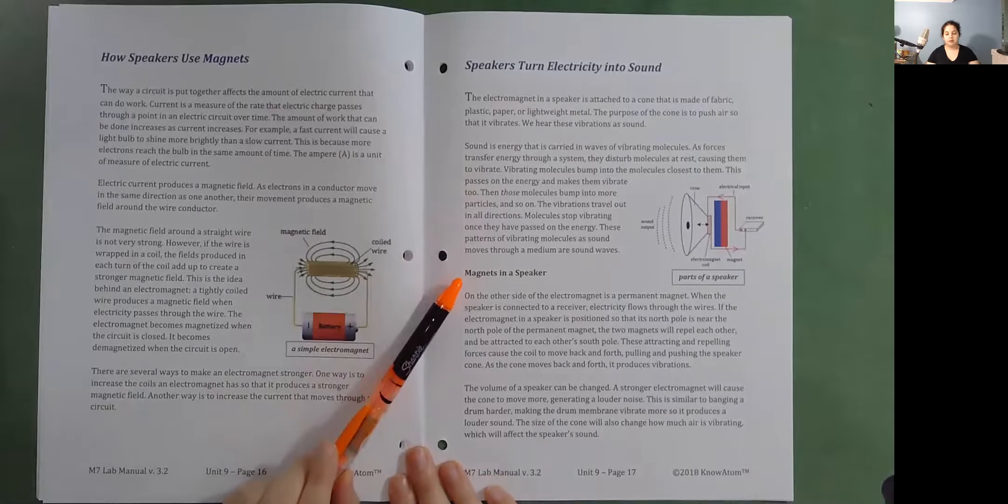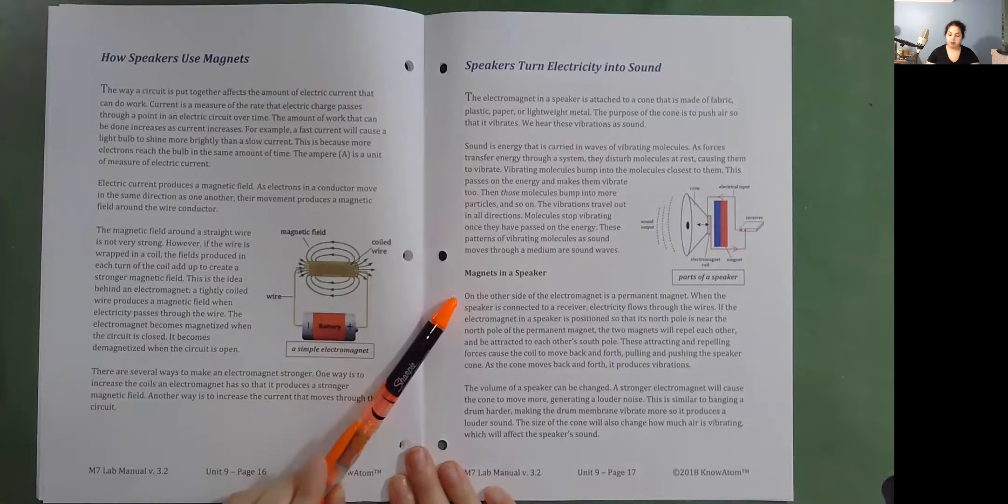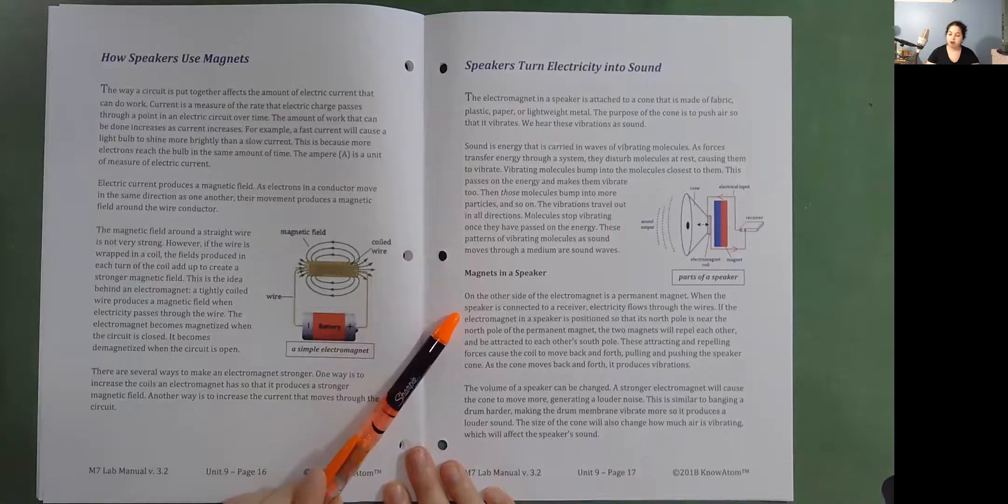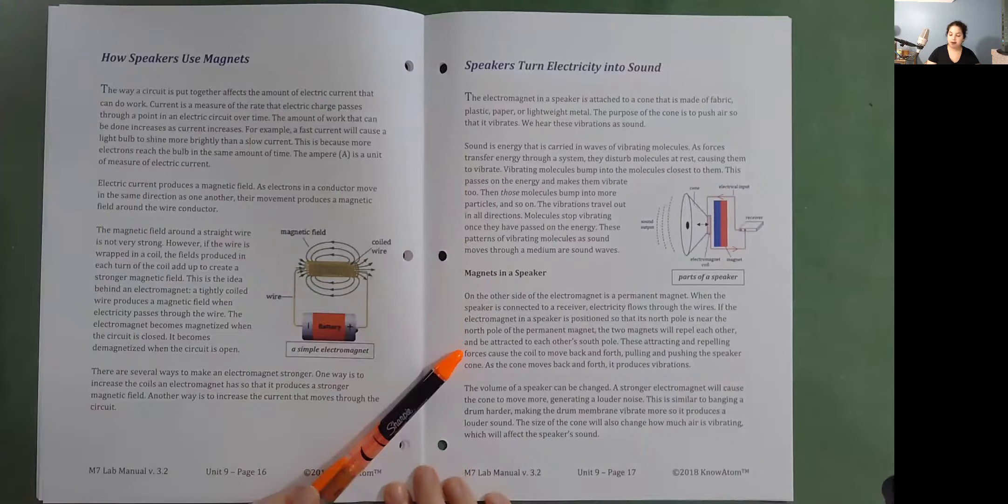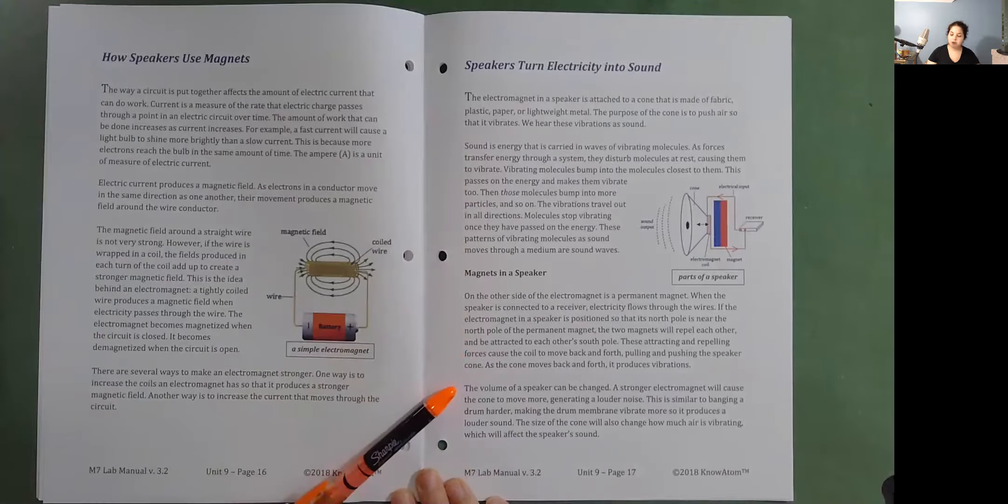Magnets in a speaker. On the other side of the electromagnet is a permanent magnet. When the speaker is connected to a receiver, electricity flows through the wires. If the electromagnet in a speaker is positioned so that its north pole is near the north pole of the permanent magnet, the two magnets will repel each other and be attracted to each other's south pole. These attracting and repelling forces cause the coil to move back and forth, pulling and pushing the speaker cone. As the cone moves back and forth, it produces vibrations. The volume of a speaker can be changed. A stronger electromagnet will cause the cone to move more, generating a louder noise. This is similar to banging a drum harder, making the drum membrane vibrate more so it produces a louder sound. The size of the cone will also change how much air is vibrating, which will affect the speaker's sound.